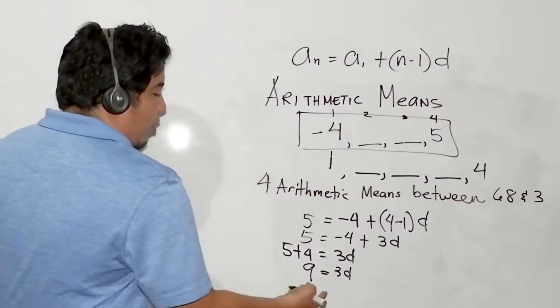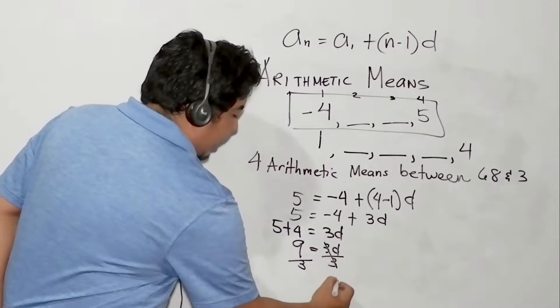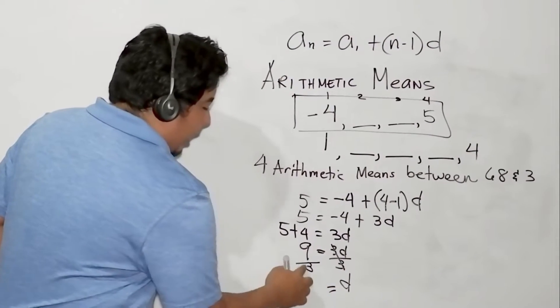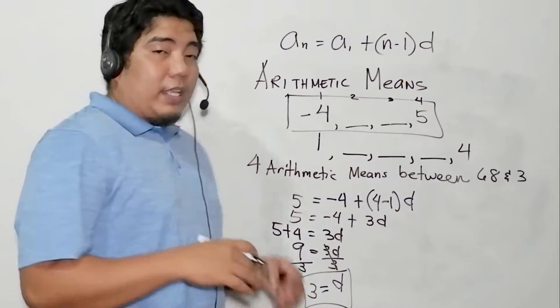This will become 9, and this equals 3d. Now we are trying to solve the value of our d. So we will divide both sides by 3, canceling them. And 9 divided by 3 equals 3, and that will be our difference.